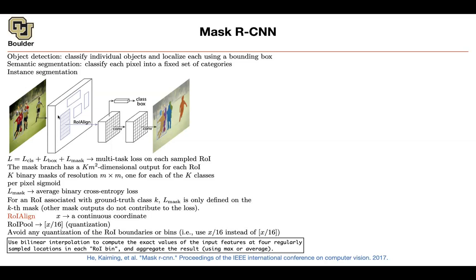So we have two problems to solve. One was: what is the loss of your mask? And how do you solve the problem that these locations are not accurate enough for a segmentation task — they are accurate for bounding box prediction but not for segmentation. Now you know the mask loss and you need to replace ROI pooling with ROI Align. That's how you solve both problems.